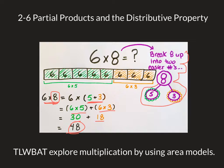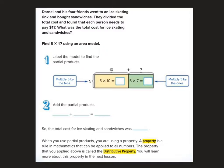Okay, so let's give it a shot. Darnell and his four friends went to an ice skating rink and bought sandwiches. They divided the total cost and found that each person needs to pay $17. What was the total cost for ice skating and sandwiches? Okay, so here we have 17 and I think it's a lot easier to break it up to 10 plus 7.